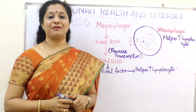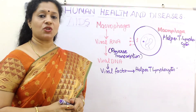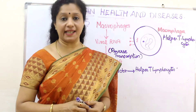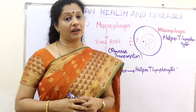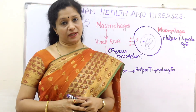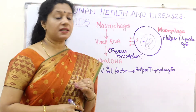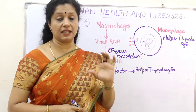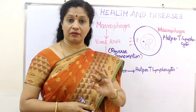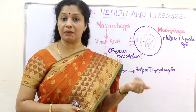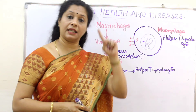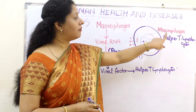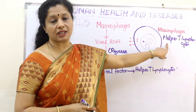Now let us talk about the infection of HIV. If it enters our body through any of the means already discussed, it is going to affect our immune system. First it attacks macrophages — the first target cell is the macrophage. If you have not learned about macrophages and lymphocytes from the previous videos, please go and watch them. Macrophages are first attacked, followed by helper T lymphocytes.